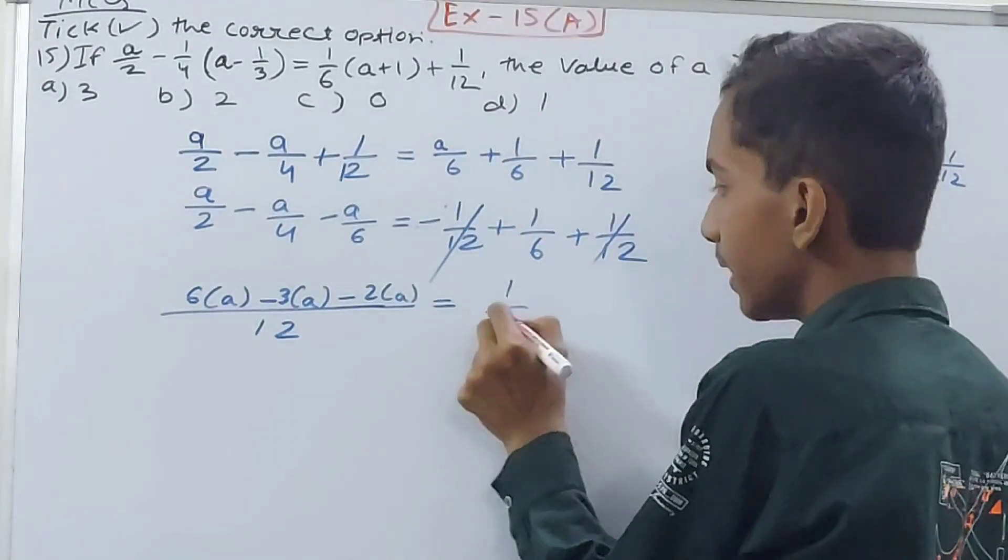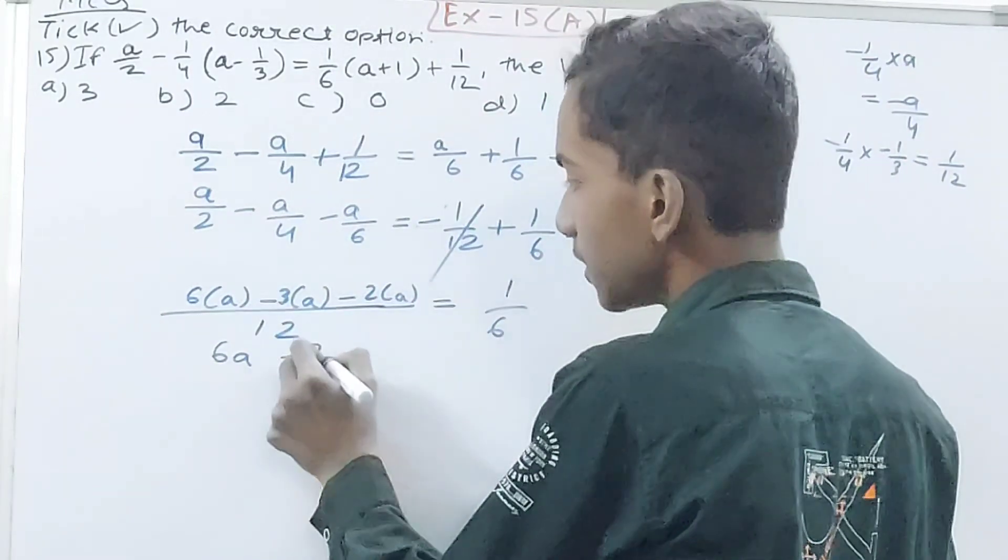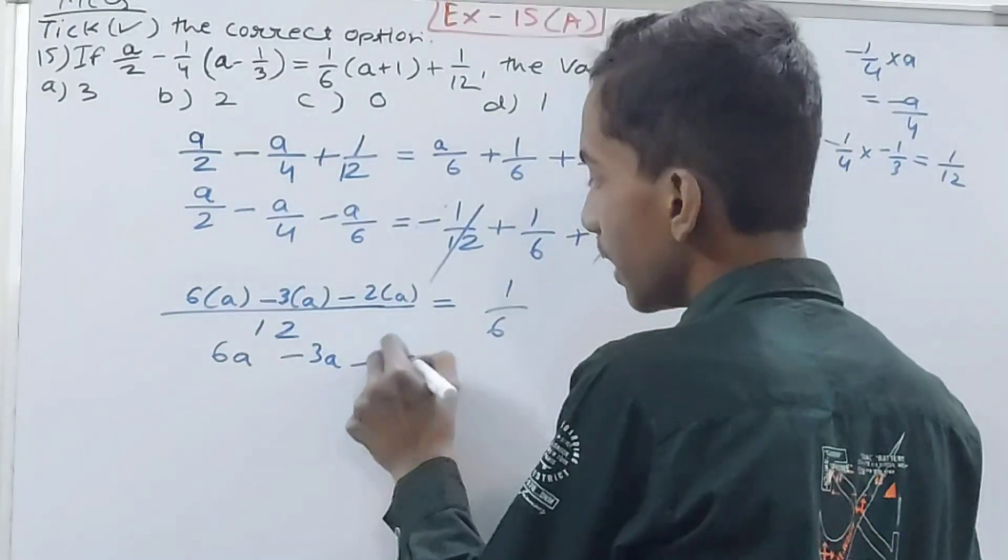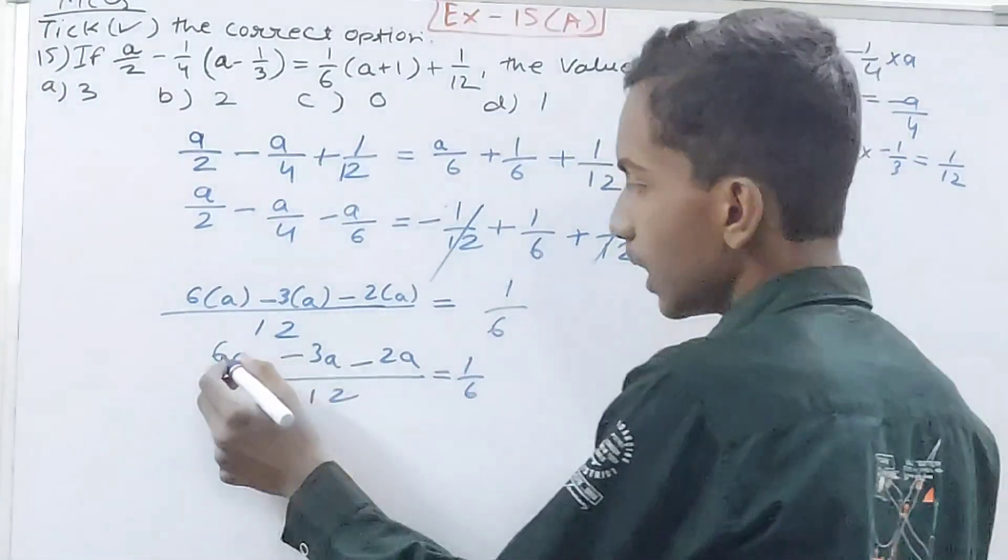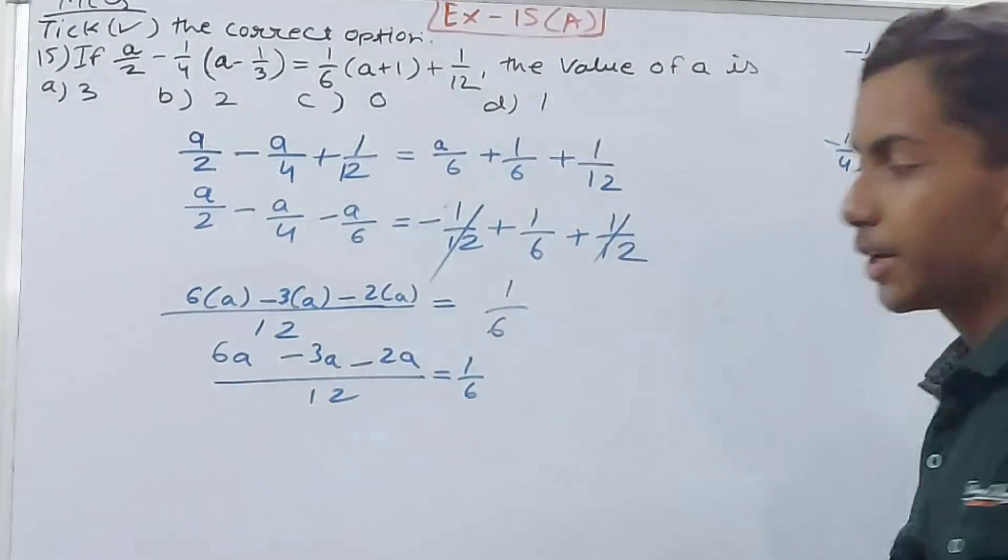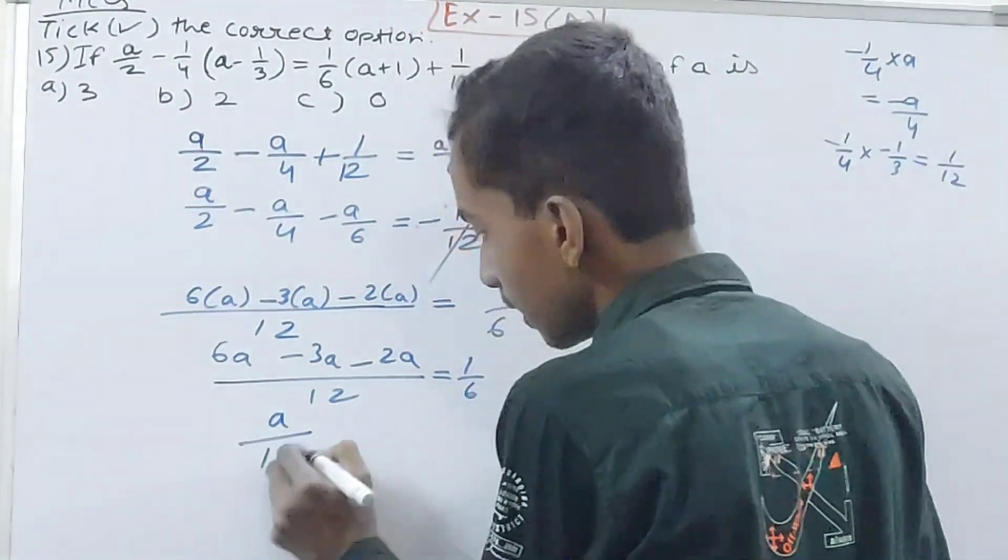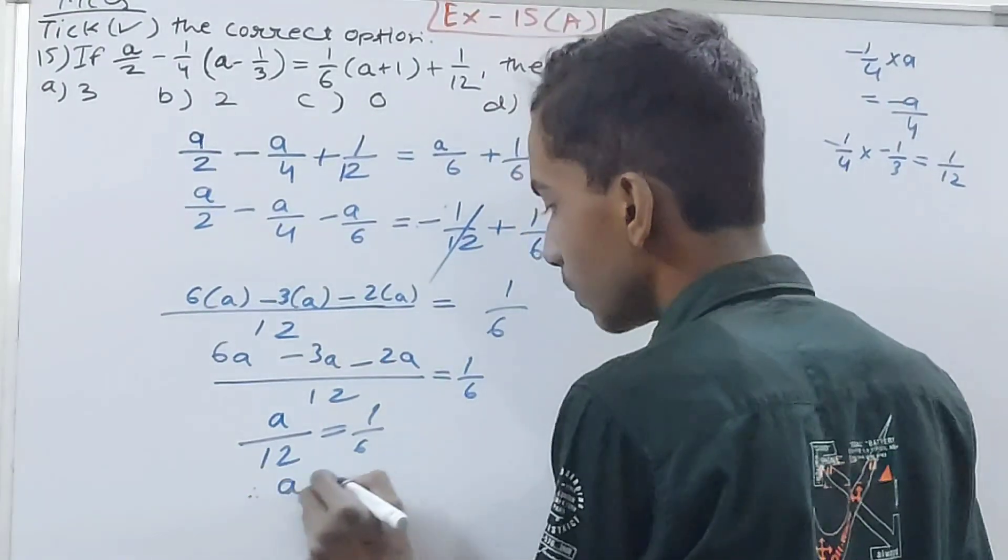This equals 1/6. You have here: (6a - 3a - 2a)/12 is equal to 1/6. 6 minus 3 minus 2 is 1, so 6a minus 5a. 6a minus 5a is a. a/12 is equal to 1/6.